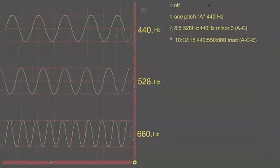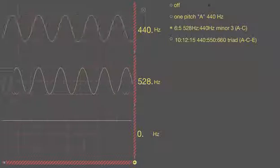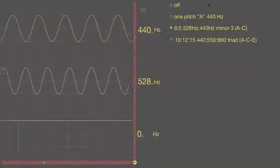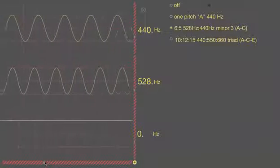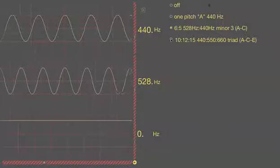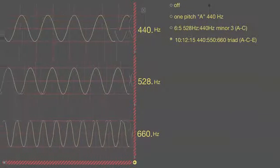Again, it is a six to five ratio. And it sounds like this. And we can put that within a 10 to 12 to 15 minor triad.